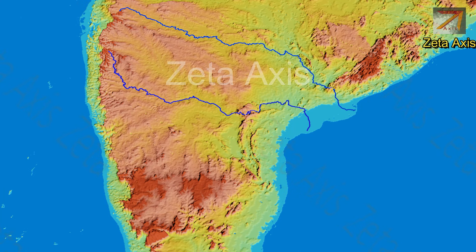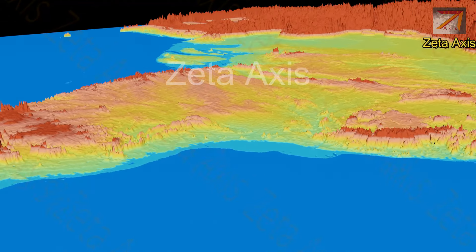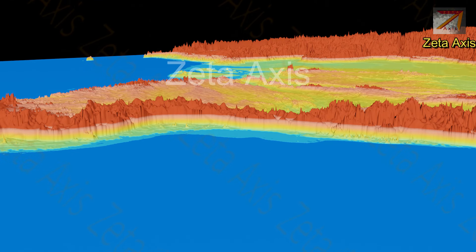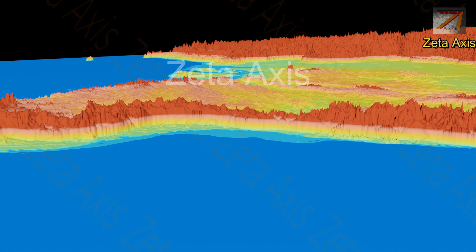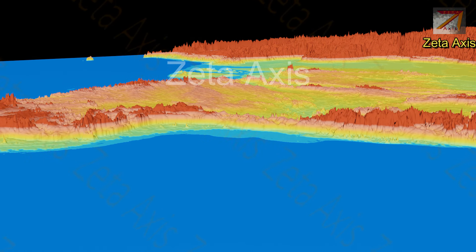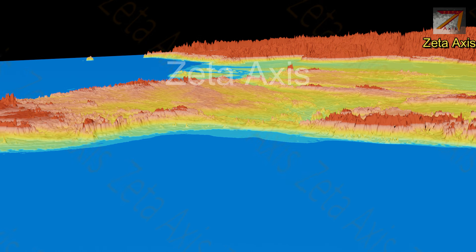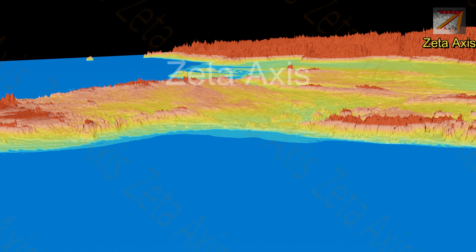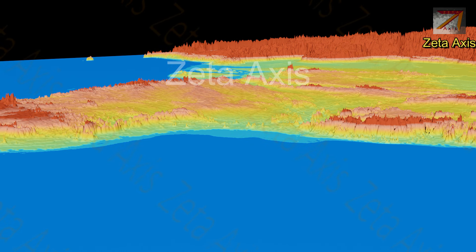There are two principal reasons why the Eastern Ghats are so discontinuous and have relatively less height. The first reason is that because the Eastern Ghats were formed around 2 billion years ago, they have been continuously eroded both by wind and by water. Because of this, what we see today is only a remnant of great mountain ranges of the past.